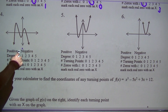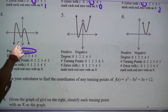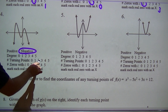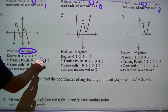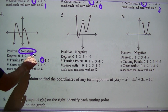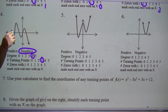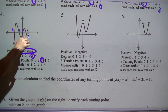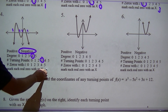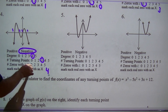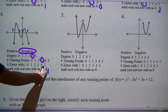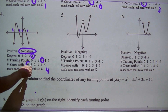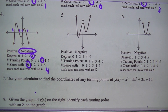Moving on to this one — this is also a negative. That's one, two, three turn points, which means degree four. This counts for one, one, one, and one, so that's four real zeros. Four plus this would have to give me the degree, so the imaginary zeros would also have to be zero.